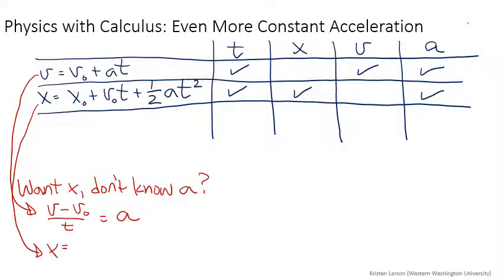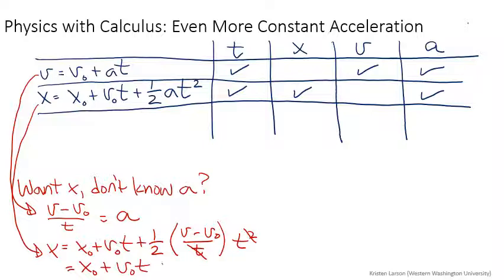I get that x is equal to x₀ plus v₀t plus one-half. Instead of a now, I'm going to put v minus v₀ all over t times t squared, and I see that x₀ goes away with this factor of t, so I get x₀ plus v₀t plus one-half v times t minus one-half v₀ times t.